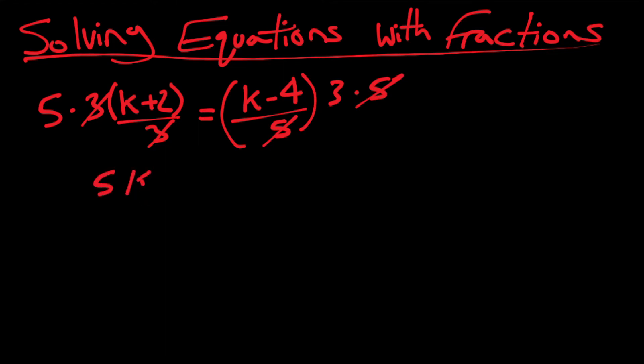So now I'm left with five times k plus two equals three times k minus four. So this is all the steps shown when we cross multiply an equation. This is more of a step-by-step situation.